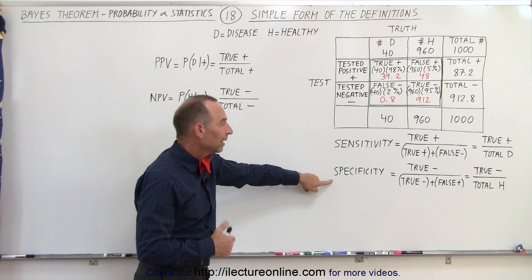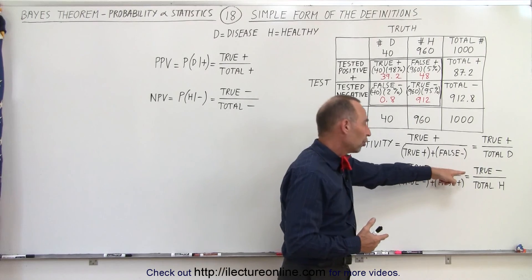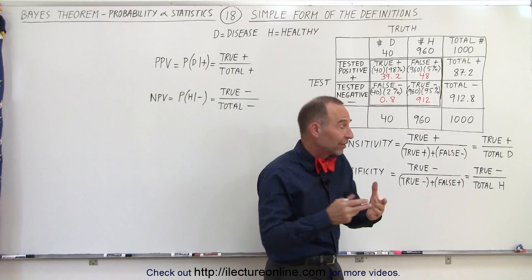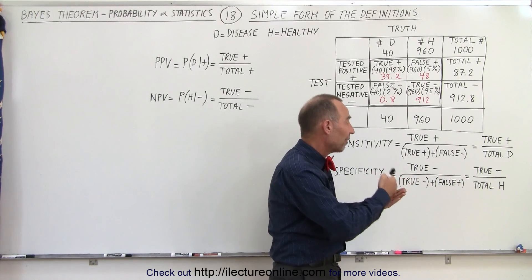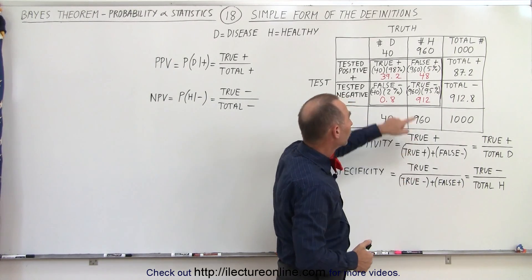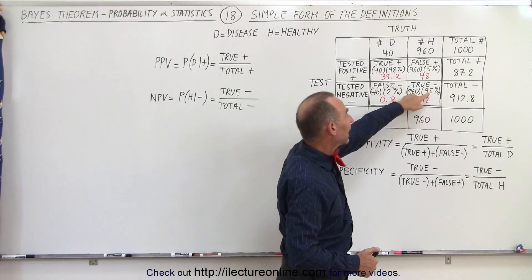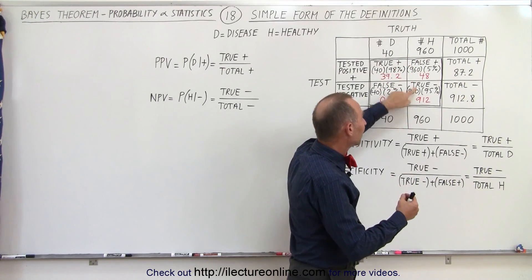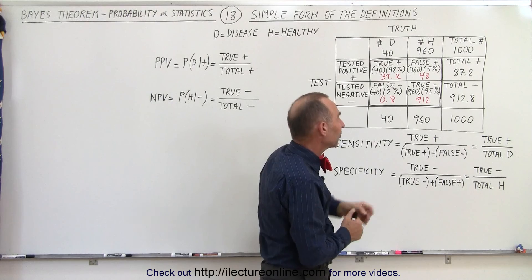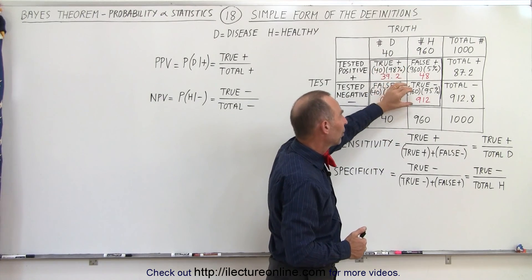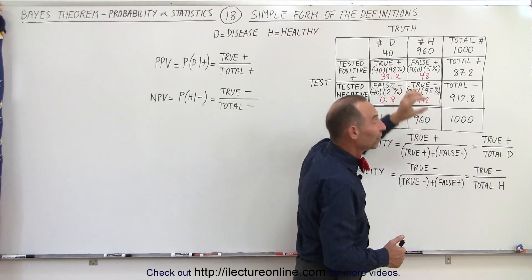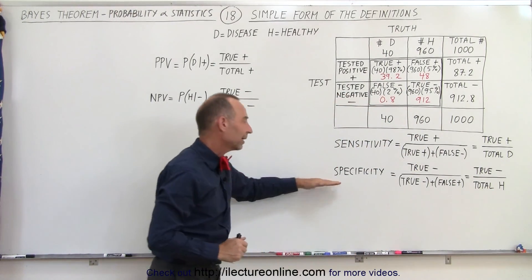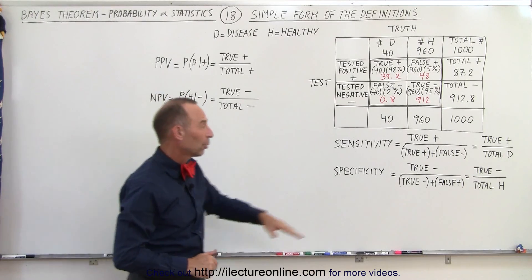Specificity is equal to the ratio of the true negatives divided by the total that are healthy. The true negatives means those that are healthy that actually test negative, divided by the total that are healthy. So the true negatives here: 912, or 95% of the 960, actually got a negative test while healthy and should get a negative test. 5% get a positive test. By definition, that ratio is the specificity, so that would be 95%.